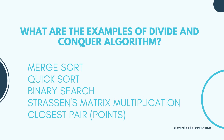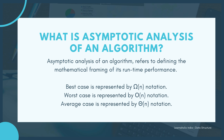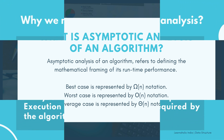The next question is: What is asymptotic analysis of an algorithm? Asymptotic analysis of an algorithm refers to defining the mathematical bounding framework of its runtime performance. Using asymptotic analysis we can conclude the best case, average case and worst case scenario of an algorithm. It provides three levels of mathematical binding: the best case is represented by Omega(n) notation, the worst case is represented by Big-O(n) notation, and the average case is represented by Theta(n) notation.